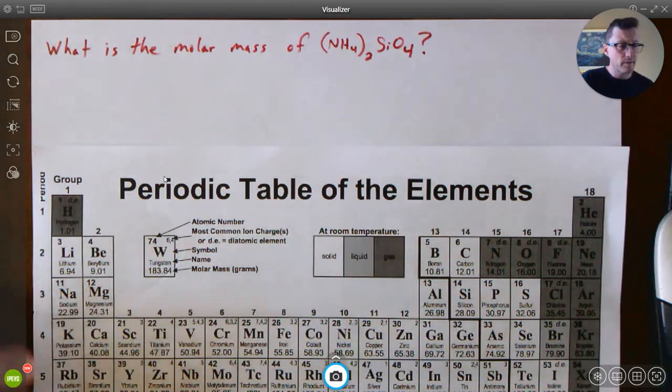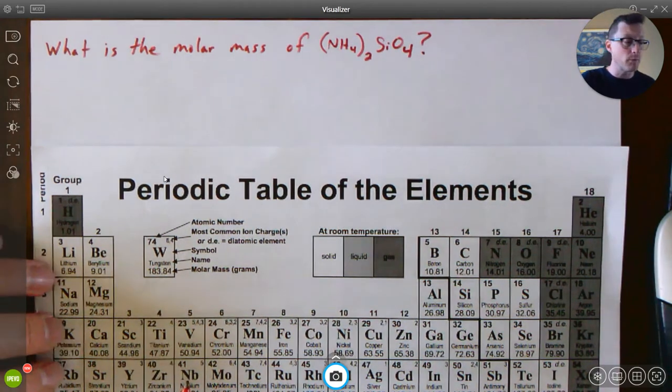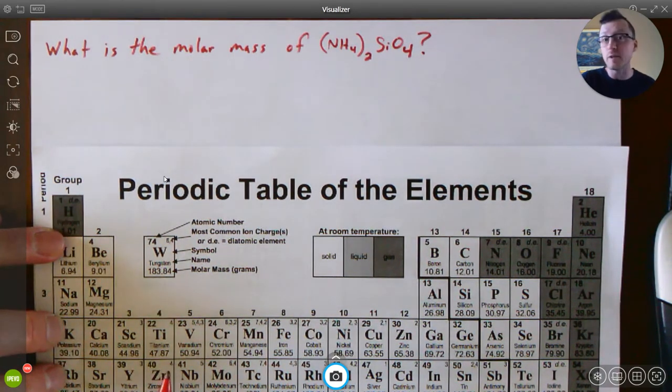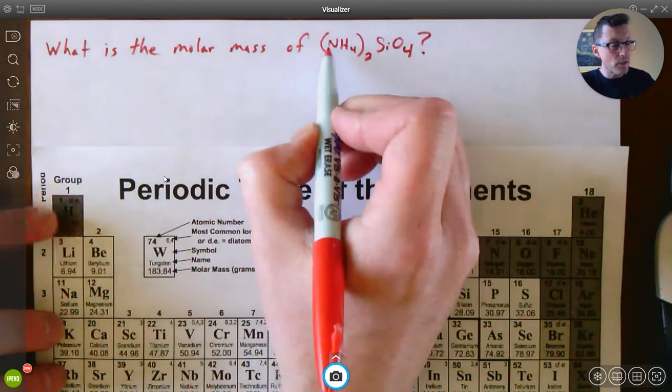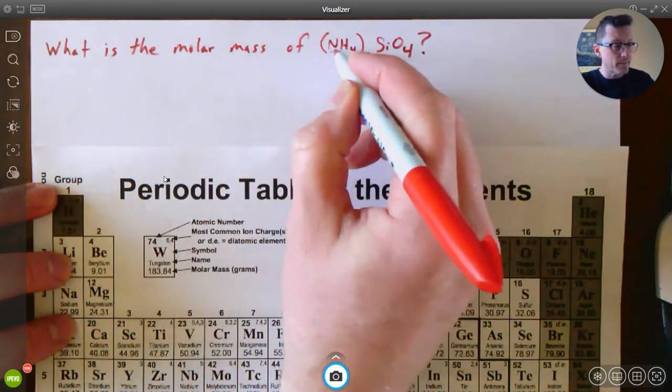So molar mass of (NH4)2SiO4 - you simply need to be able to figure out how much each element weighs and how many of them you have. So my first element that I'm seeing here is I have N's.